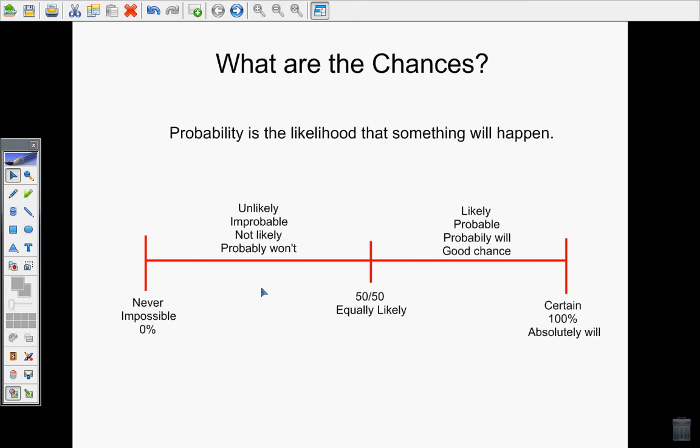Things on this side of the number line probably won't happen. There's lots of different ways of describing that. You could say it's unlikely, it's improbable, not likely, or it probably won't happen.